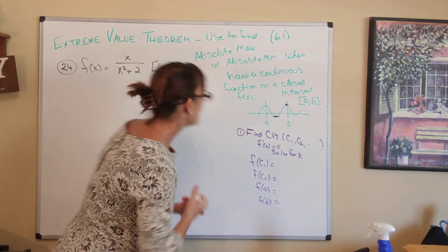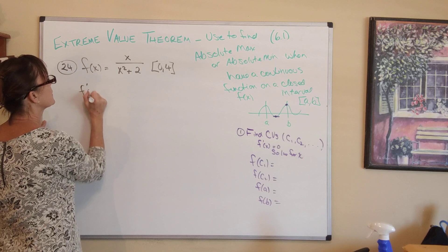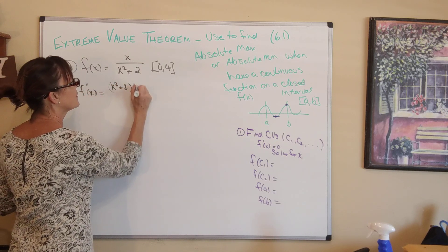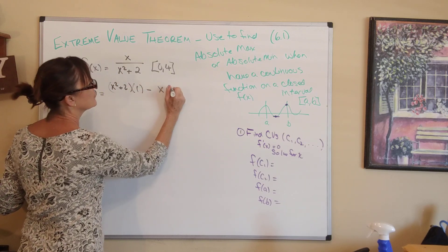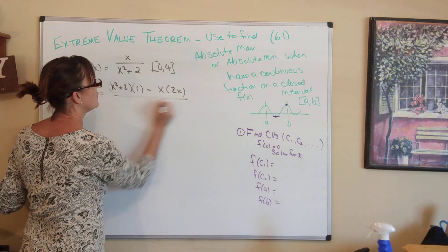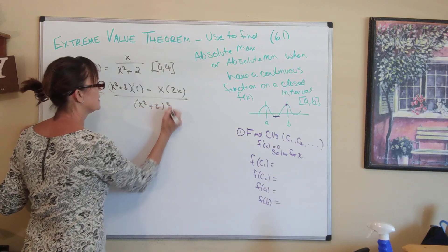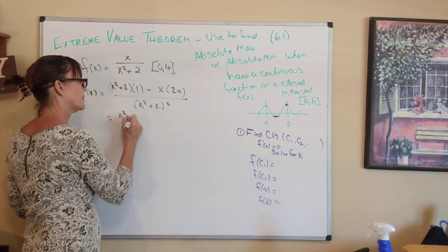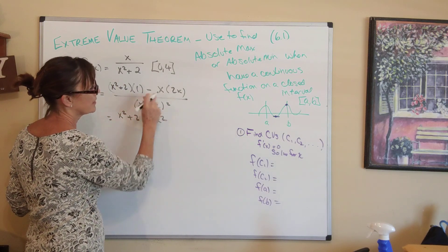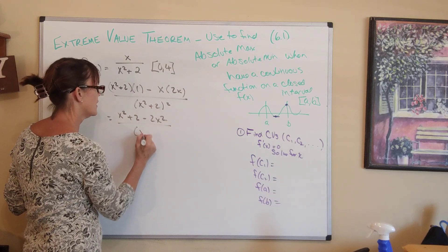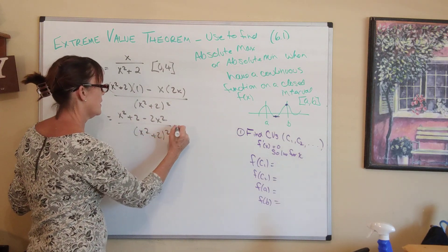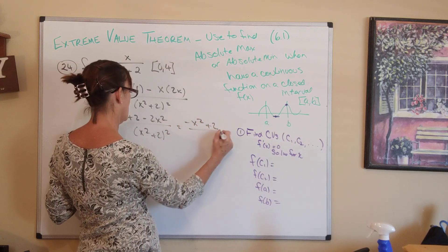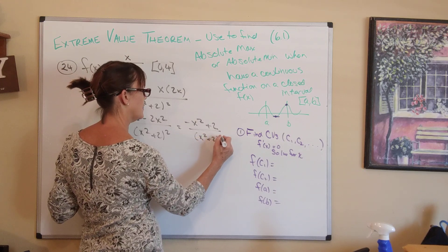To find the first derivative, we use the quotient rule: low d-high minus high d-low over low squared. That gives us (x² + 2)(1) minus x(2x) over (x² + 2)², which simplifies to (x² + 2 − 2x²) over (x² + 2)², or (−x² + 2) over (x² + 2)².